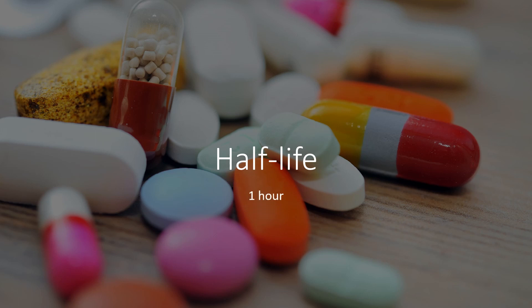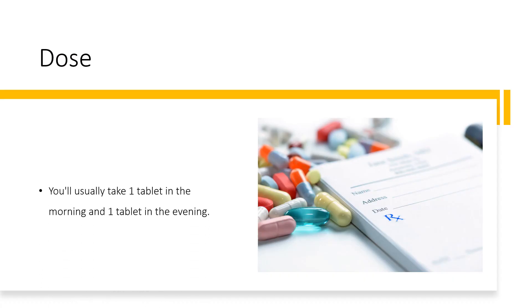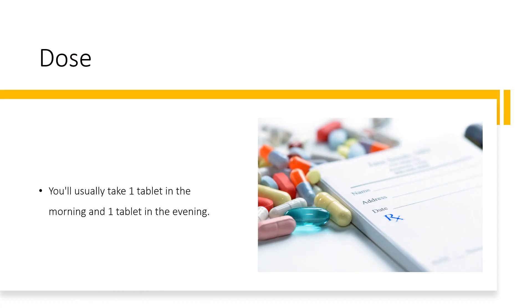Half-life: The elimination half-life is approximately 1 hour. Dose: Nicorandil comes as 10mg tablets. You'll usually take 20mg a day, but this may go up to 40mg if your doctor thinks you need it. If you often get headaches, you may be given a smaller starting dose of 5mg twice a day, which can be increased after about a week. You'll usually take one tablet in the morning and one in the evening.